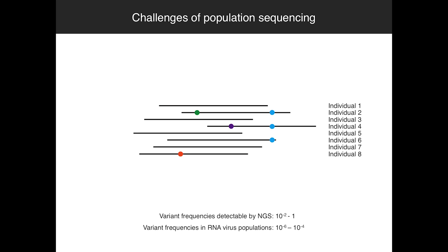For population sequencing — when you're sequencing an RNA virus, for example — each read can come from a different individual. So when you have errors, you can't tell if that's a true genetic variant or an error, because there's no way to identify whether reads over the same region come from the same virus. So you can't correct errors using this kind of consensus-based approach.